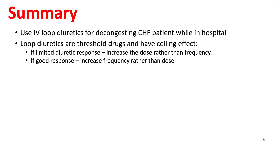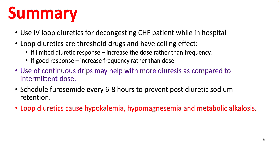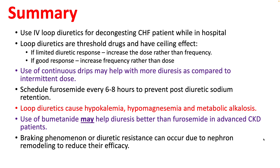To summarize: use IV loop diuretics for decongesting CHF while in hospital. Loop diuretics are threshold drugs with a ceiling effect — if you have limited diuretic response, increase the dose rather than frequency; if you have good response, just increase the frequency. Continuous drip may help moderate diuresis over intermittent dosing if you maintain a level above the threshold. Schedule furosemide every six hours to prevent post-diuretic sodium retention. Complications include hypokalemia, hypomagnesemia, metabolic alkalosis, and hyperuricemia. Bumetanide may achieve better diuresis than furosemide in advanced CKD because it is also filtered through the glomeruli. Braking phenomenon or diuretic resistance can occur due to nephron remodeling.